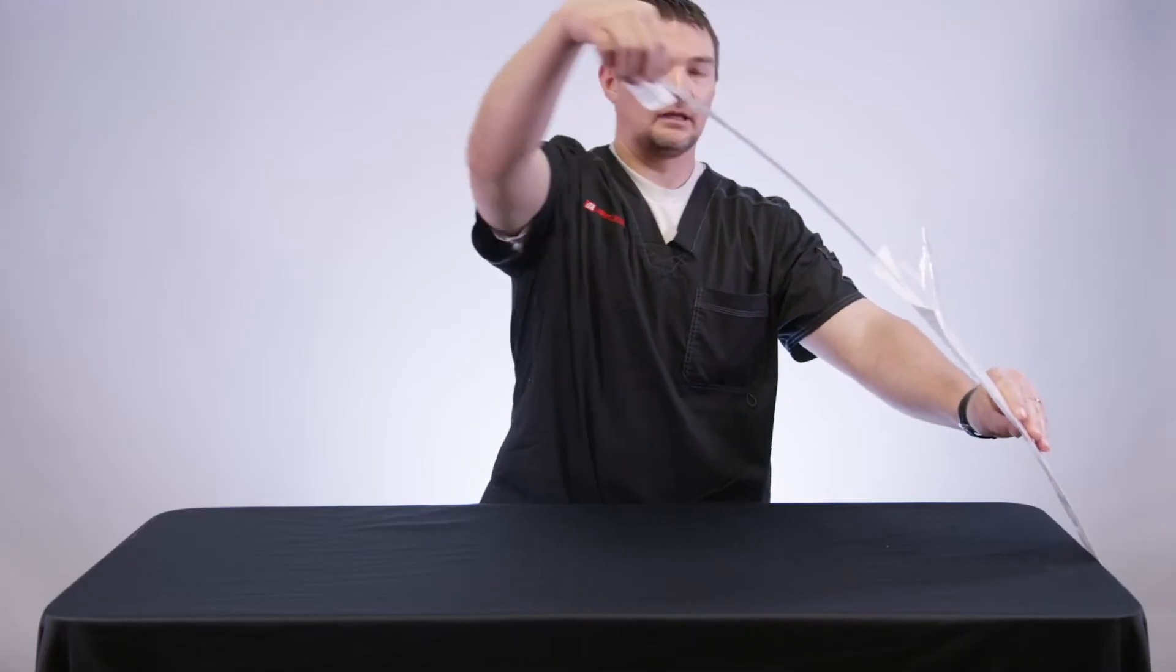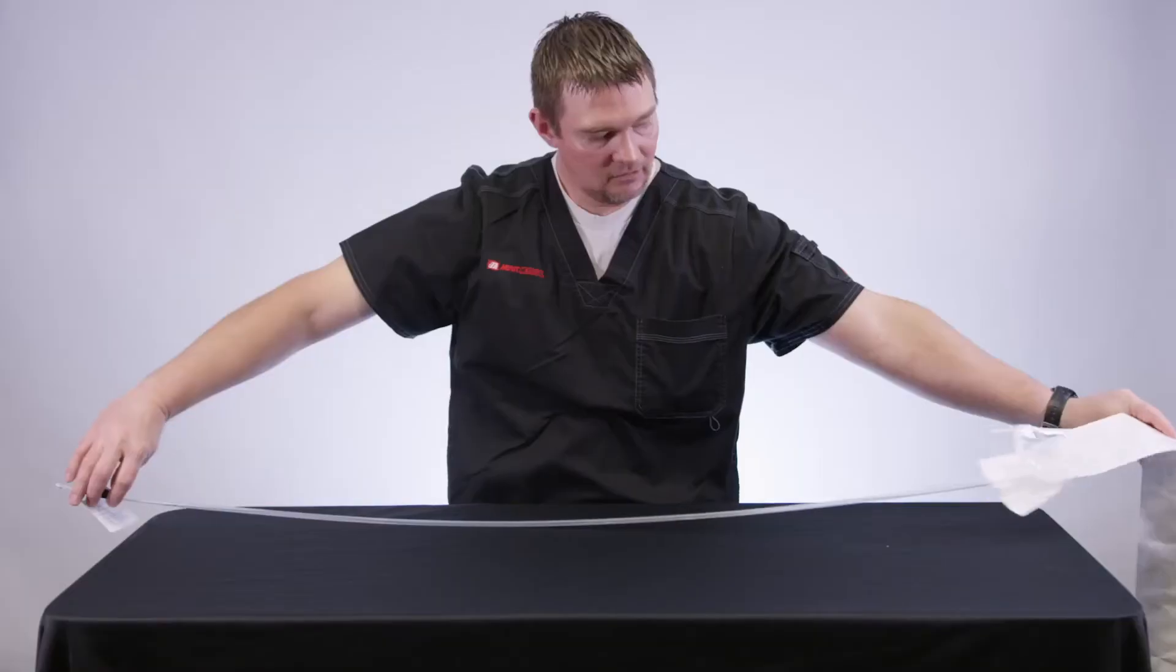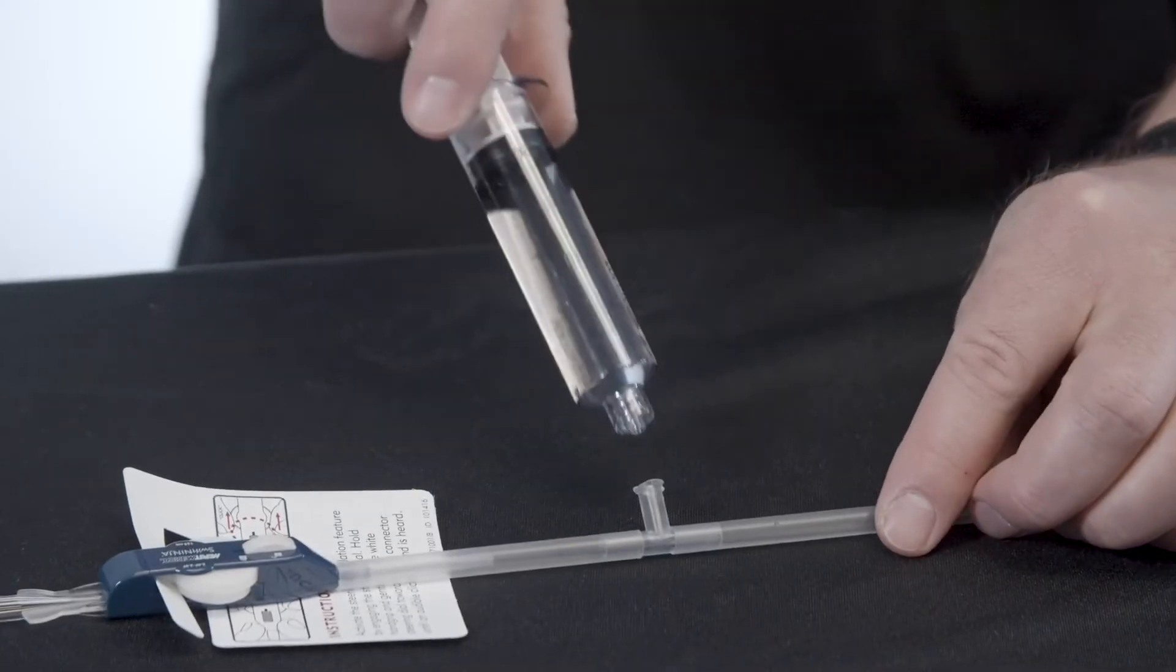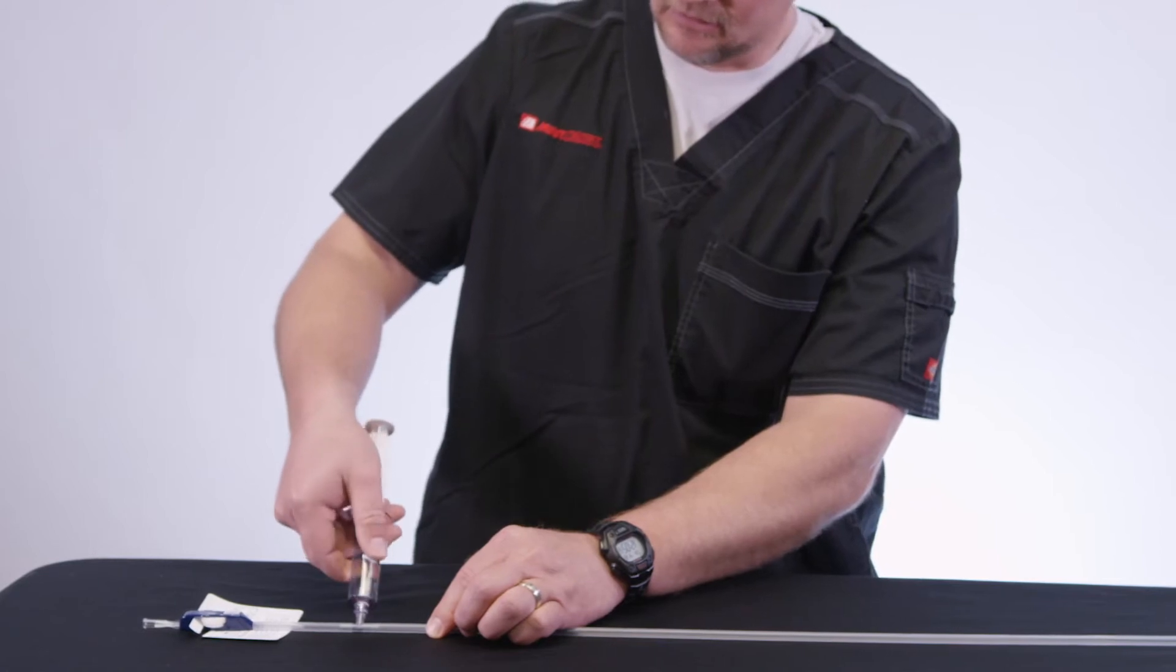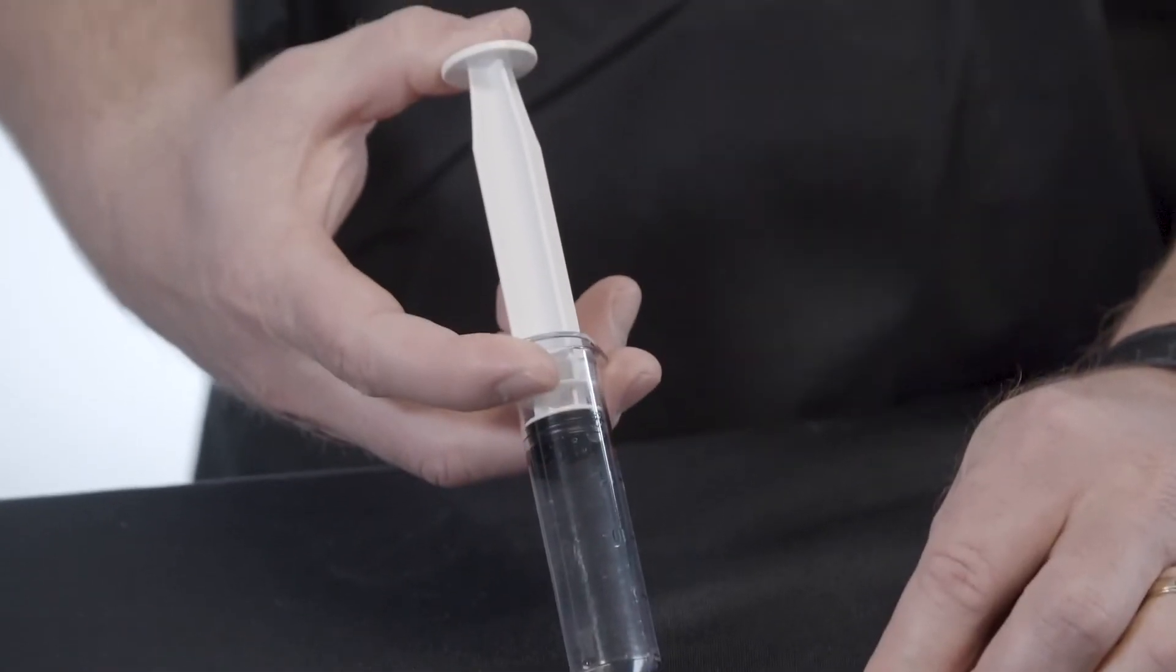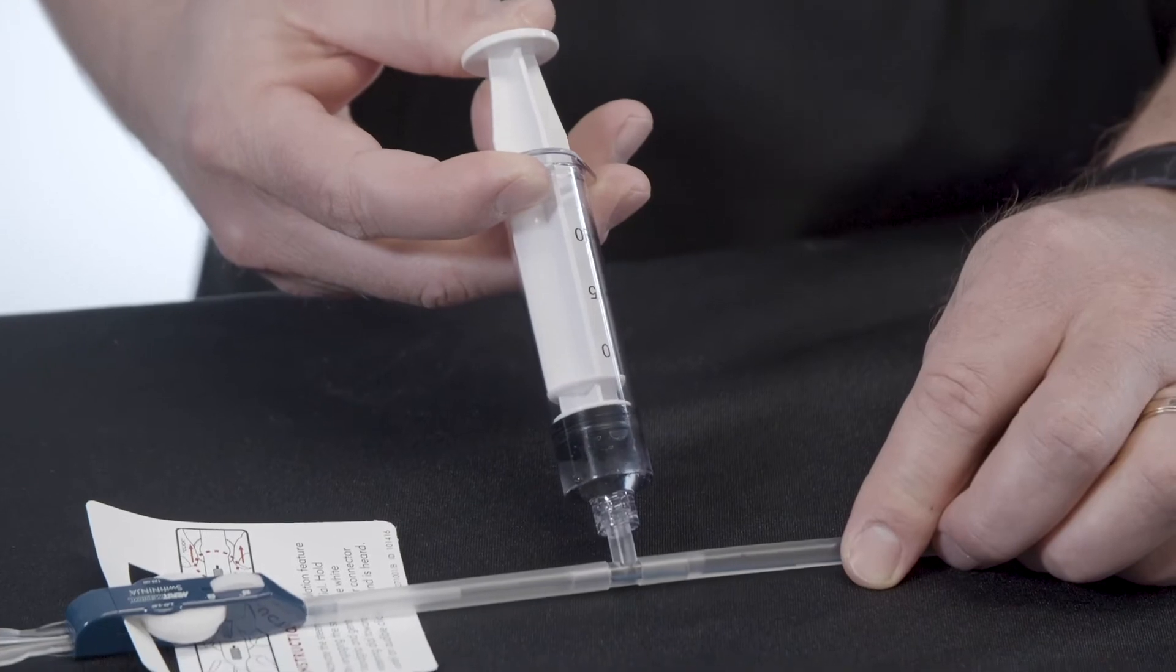Remove the Swift Ninja, including the holder, from the package and lay them out on the table. Attach a sterile syringe filled with heparinized saline solution to the luer lock fitting of the microcatheter holder and inject enough saline to wet the entire microcatheter surface to activate the hydrophilic coating.